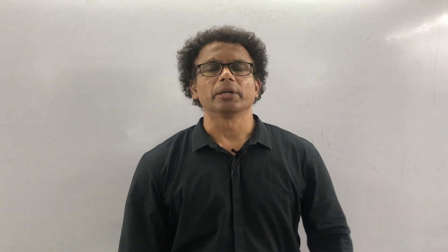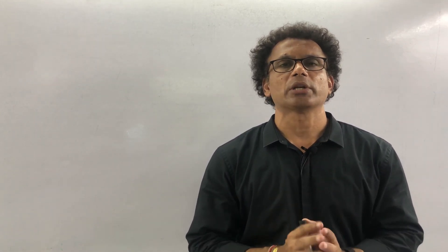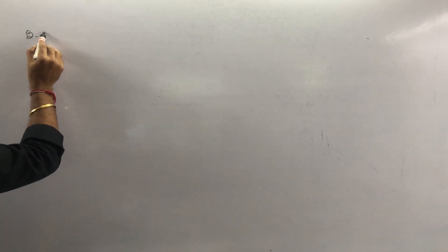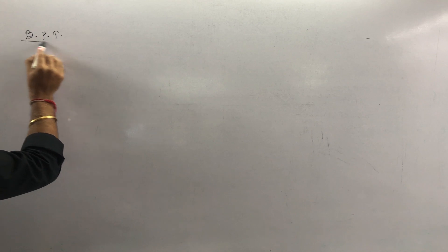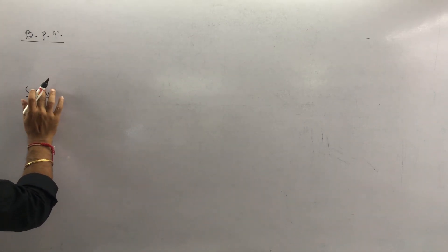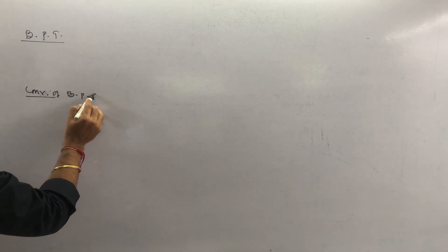We will continue with your similarity chapter. The last video we did exercise 1.1; in this video we will be doing exercise 1.2. If you look at 1.2, both sums are deleted — hardly 3 or 4 sums. What we will do here: the very first one is we will go with your properties. The very first one is your BPT, that is called the basic proportionality theorem. Then we got the converse of basic proportionality theorem.